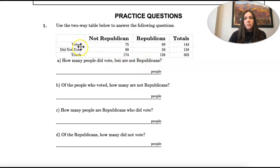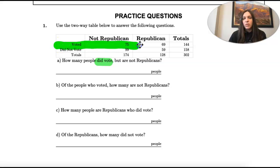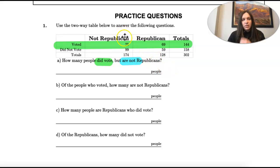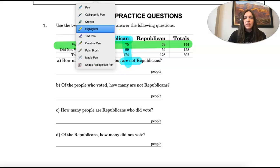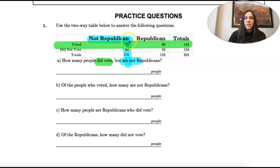It's going to put us with columns and rows. 'Did vote' would be this whole row — these are people that voted. And then we're going to look at people that are not Republican, and that's going to be a column right here. So it's asking which one of these intersect. These 75 people are both people that voted and people that are not Republican. That would be our answer: 75.